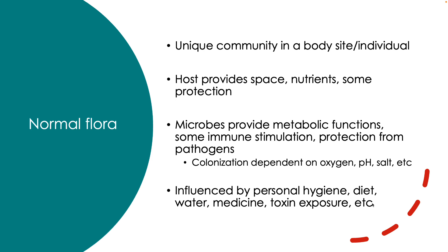Cows, for example, cannot digest cellulose — it's the microbes that live in the cow's intestines and in their stomach that allow the breakdown of those complex carbohydrates. Microbes can also provide things like short chain fatty acids, which provide an excellent source of energy for us. They can provide vitamins and other metabolites that we can use as well.